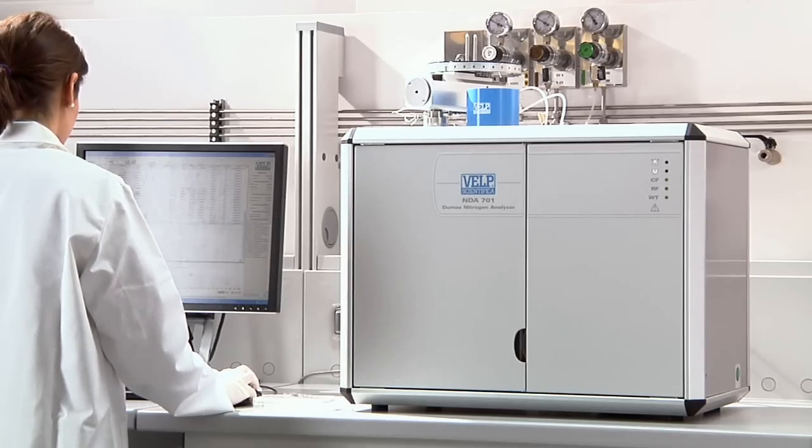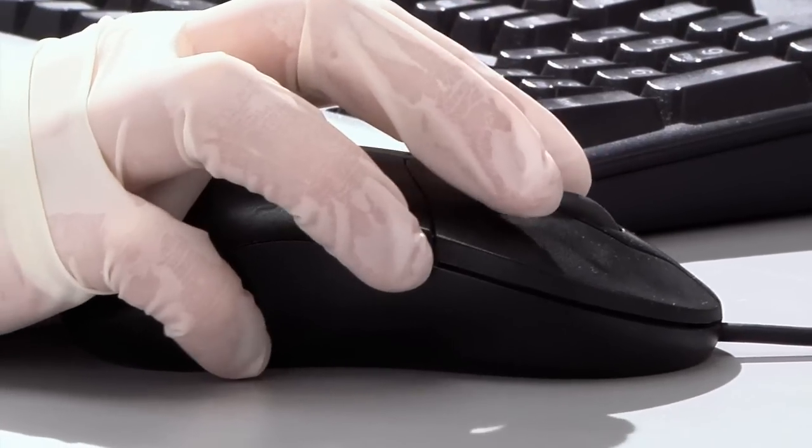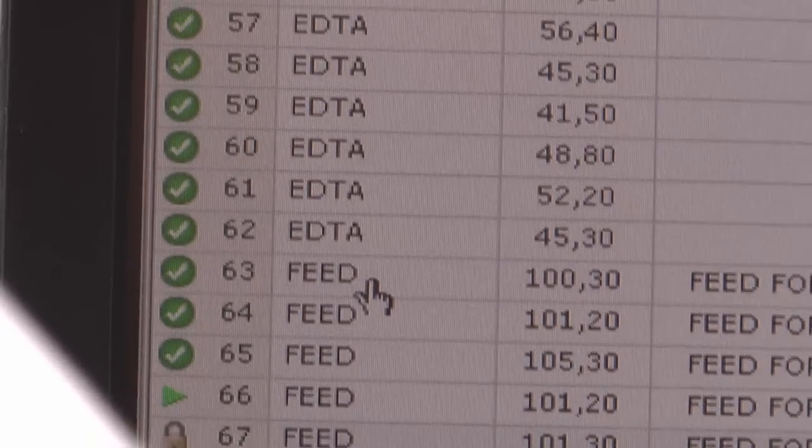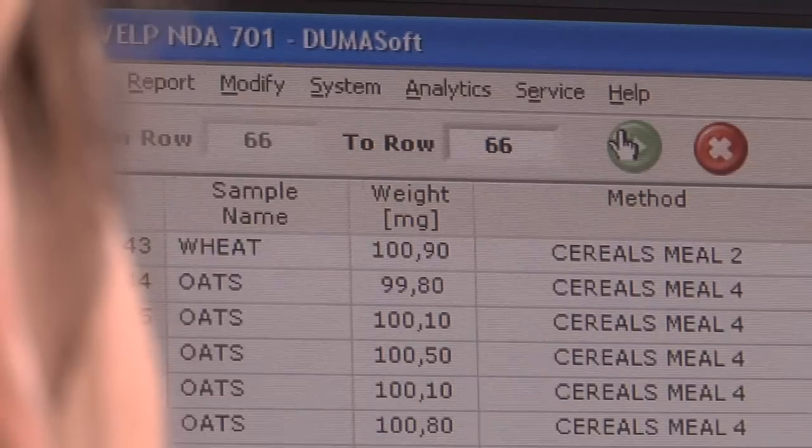Automatically, the sample is purged in a stream of helium, eliminating all traces of atmospheric nitrogen, essential because the NDA 701 is able to reach particularly low detection limits.